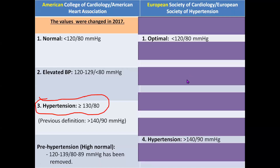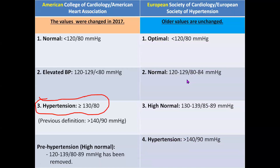But in Europe the values are the same for hypertension. That means if a person has systolic more than 140 and diastolic more than 90 mmHg, then the person has hypertension.